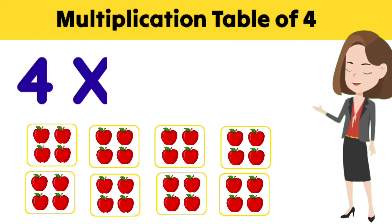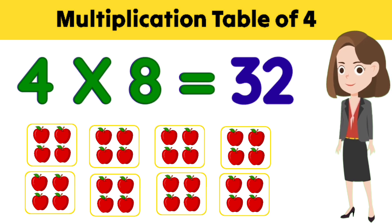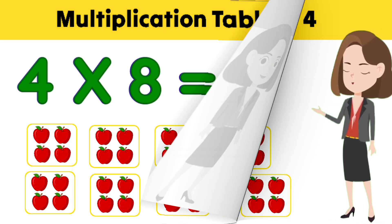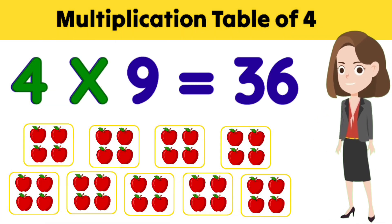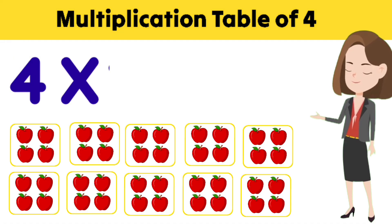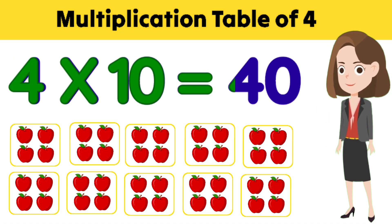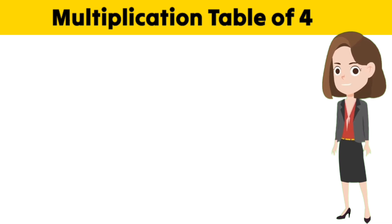Four eights are thirty-two. Four nines are thirty-six. And four tens are forty. So children, we learnt the multiplication table of four. Let's revise.